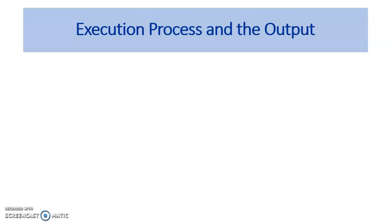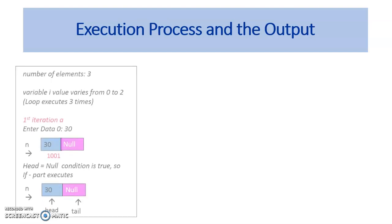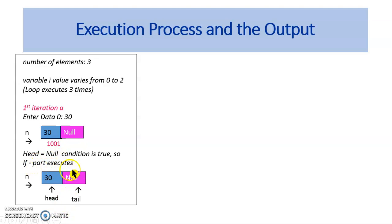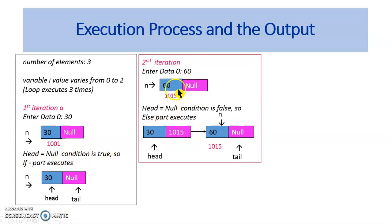Let us see what happens during the creation of the node in detail. Let us assume the number of elements in the list is given to be 3. As the i value varies from 0 to 2, the loop executes 3 times. During the first iteration, the new node is created — assume it is created at memory location 1001. The data value is set to 30 and the next pointer is set to null. Head equal to null condition is true during the first iteration as the list is empty initially. Hence, set the head pointer and the tail pointer to point to n. At the end of the first iteration, the list looks like this.